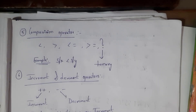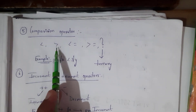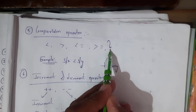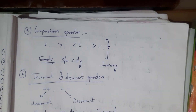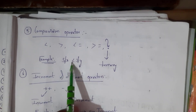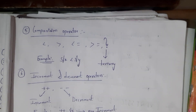The fifth one is the comparison operator. To compare two variables we use this operator. It includes: less than, greater than, less than or equal to, greater than or equal to, and the ternary operator denoted by the question mark symbol. For example, $x < $y.